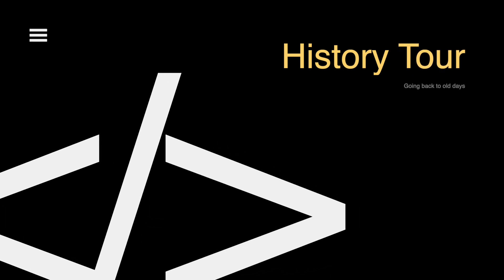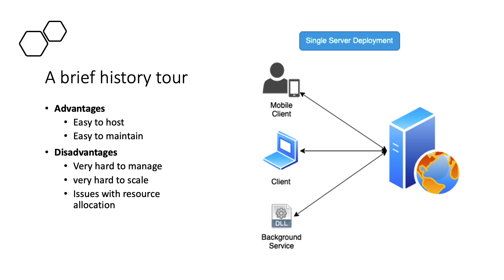Starting with a brief history tour — single server deployments are when we have all the applications and services hosted on a single server, which means the server did not implement single responsibility. The server was jam-packed with everything, from multiple applications and services running on it. There was not enough resources to handle everything, or resource management was complicated. For example, a mobile application might take up 75% of the resources, with the remaining 25% distributed among background services and clients, and there was no way to allocate, say, 40%, 40%, and 30% as needed.